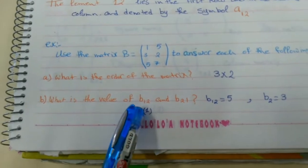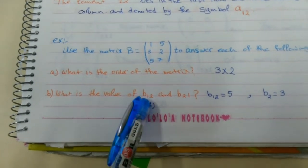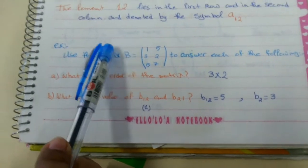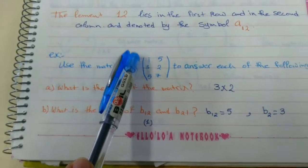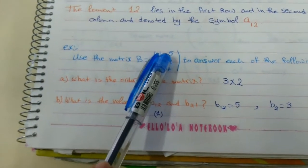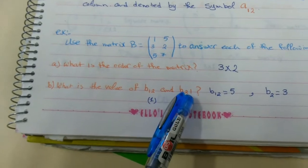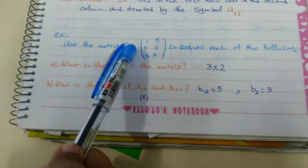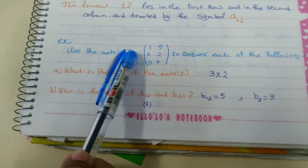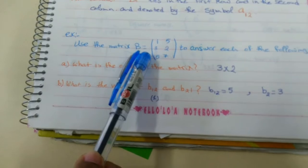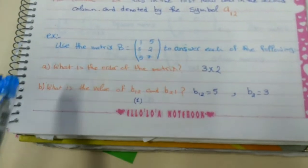What is the value of b₁₂? 1 means the first row, 2 the second column. So b₁₂ equals 5. What is the value of b₂₁? We are asking about row number 2 and column number 1. This is what? 3.